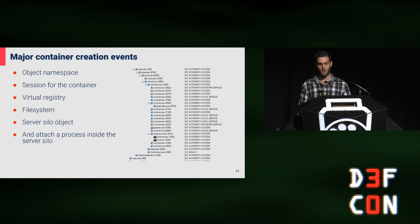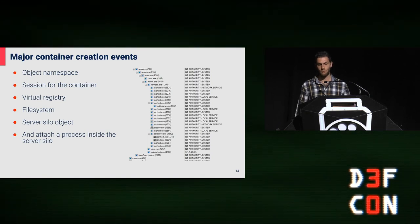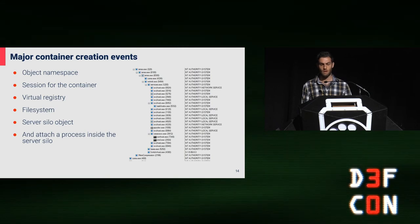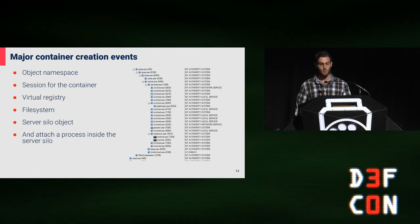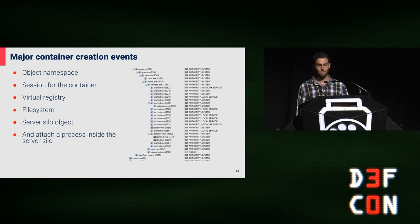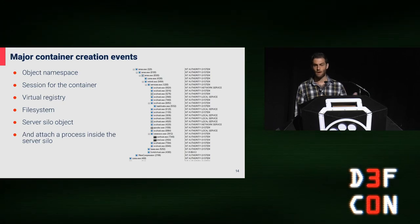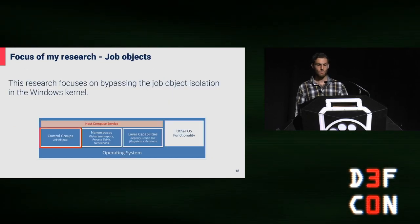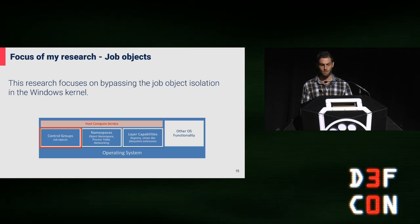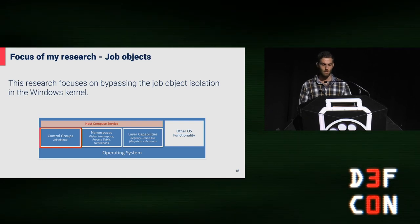There are two parts for Windows containers: the engine which manages all the containers — Docker engine — and the operating system part which is responsible for the isolation of the container from the host. When a new Windows container begins, it creates the environment required: the file system, object namespace, job object, and the processes that will run inside. Windows container isolation is separated into three parts: job objects, namespaces, and layers. I'm going to focus on bypassing the kernel isolation of the job objects.